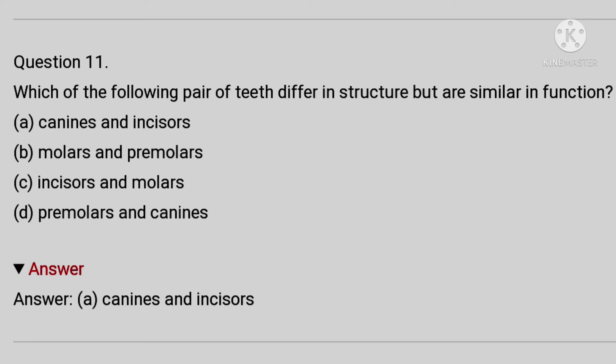Eleventh question is: Which of the following pair of teeth differ in structure but are similar in function? A: canine and incisors. B: molar and premolar. C: incisors and molars. D: premolars and canine. Answer is canines and incisors.